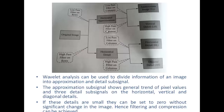My horizontal approximation is obtained, and then I again apply the low pass filter on the columns and the high pass filter on the columns of this horizontal approximation. I get an approximate image by applying two low pass filters across the row and the column. Applying the high pass filter on the horizontal approximation gives the vertical details. When I apply a low pass filter on the horizontal details, I get the horizontal details of the image, and applying the high pass filter on the columns of the horizontal detail gives the diagonal details.